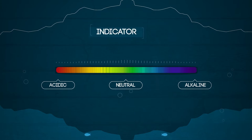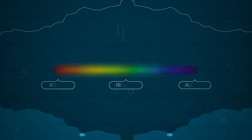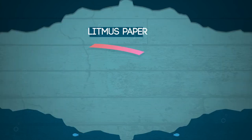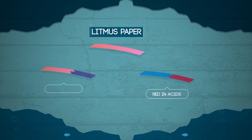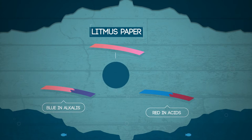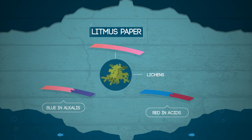Indicators are substances that show different colours when they are in acidic or alkaline conditions. Litmus paper is a simple indicator that tells us whether something is acid or alkali. Litmus is red in acids and blue in alkalis. Litmus paper is made from lichens which have been used to dye cloth for hundreds of years.